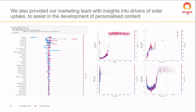In addition to providing propensity scores, something else requested by the business — and we felt was really important to assist in adoption — was to provide insights into which features were actually important. It's one thing to say here's a black box model that produces propensity scores, but what our marketing team was looking for is which features in particular are important and which are actionable drivers they can use to develop personalized content. Something we found really useful: with complex models like gradient boosting there's a trade-off between complexity and explainability. We used SHAP values — Shapely Additive Explanations, a Python library — to get around this, and we'd really recommend it for a use case like this.